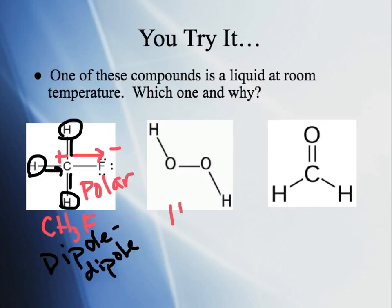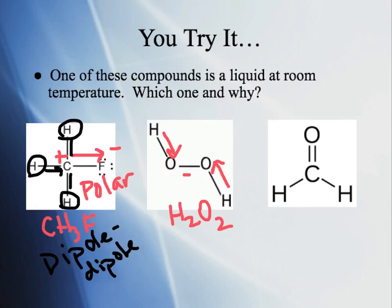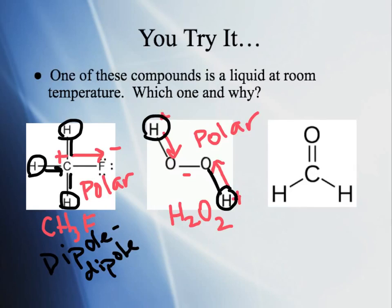Next, H2O2 (hydrogen peroxide): the electronegativity difference between H and O is very strong. Oxygen pulls more on the electrons — it will be polar, with negative charge toward the middle and positive ends at the hydrogens. Both hydrogens are connected directly to an oxygen, so this qualifies as a hydrogen bond intermolecular force.